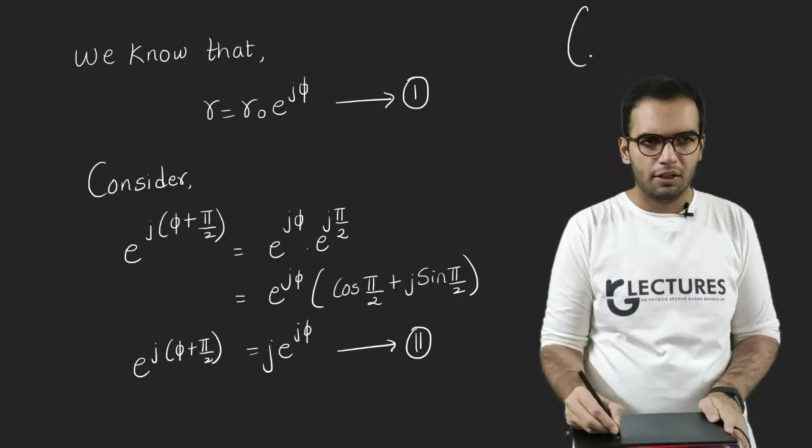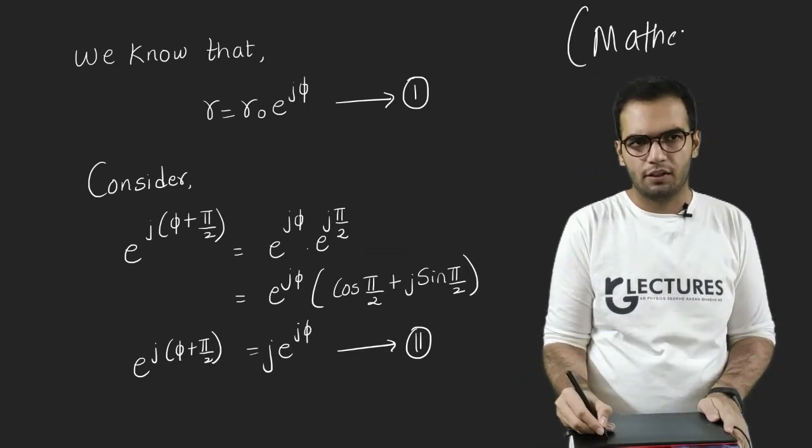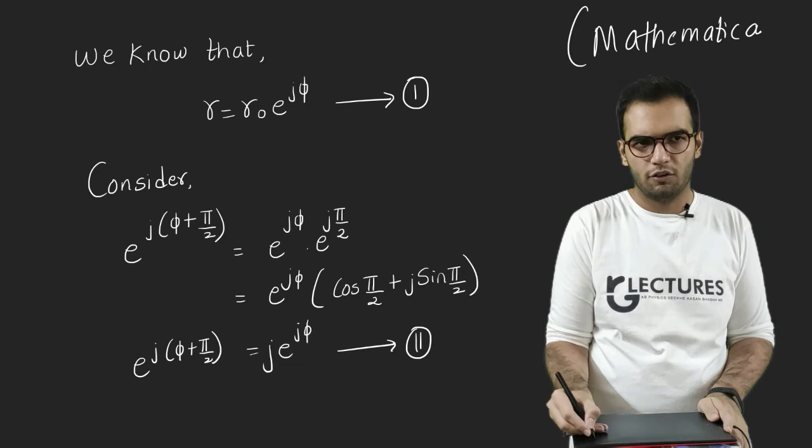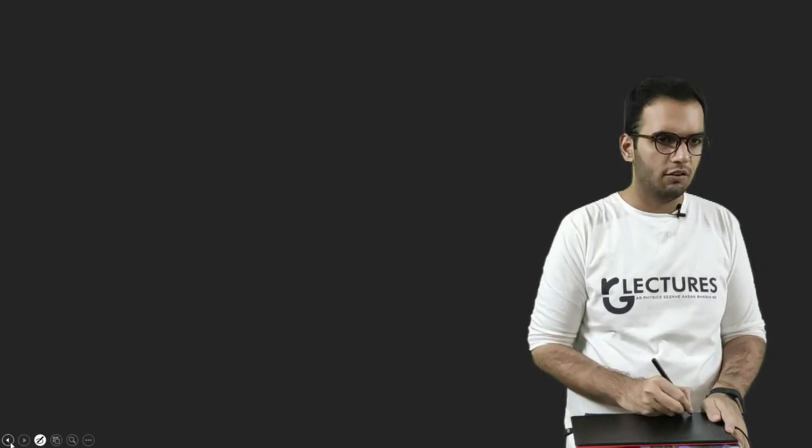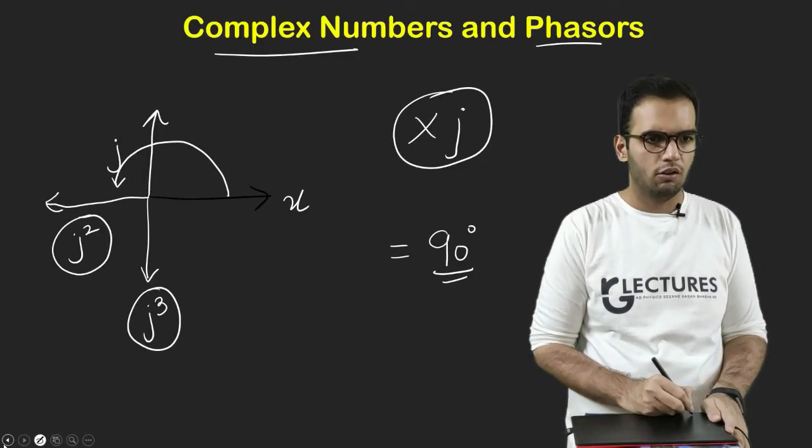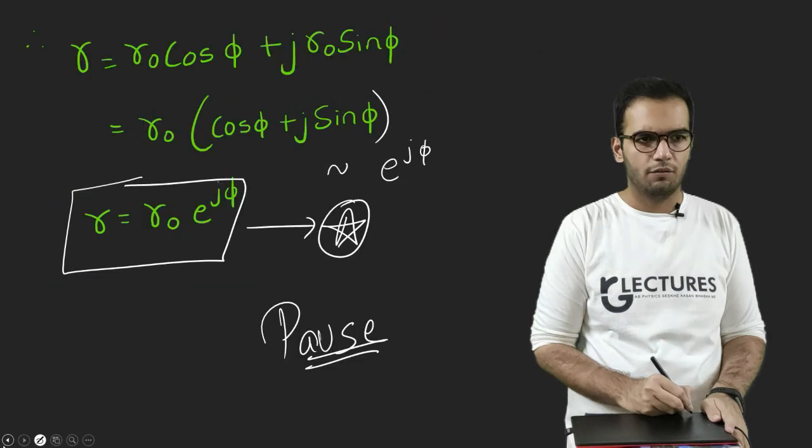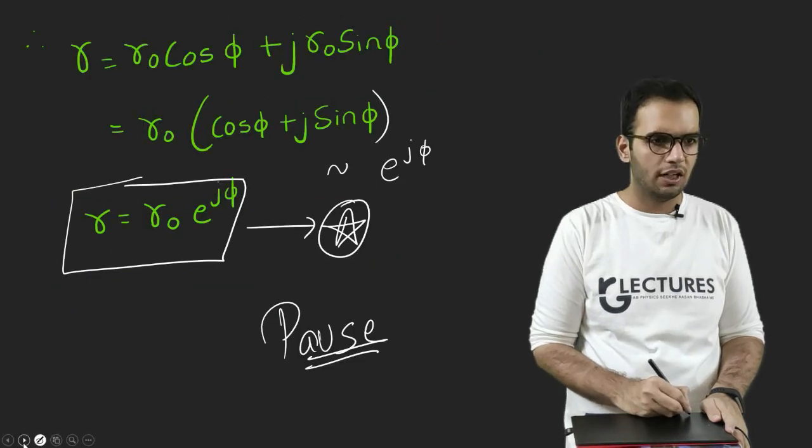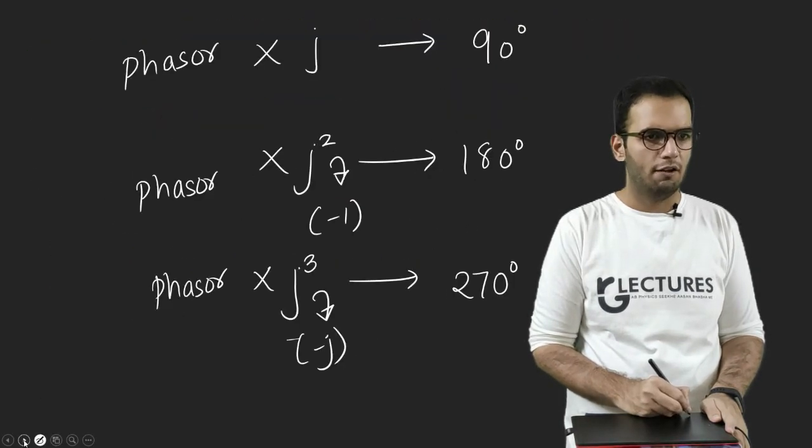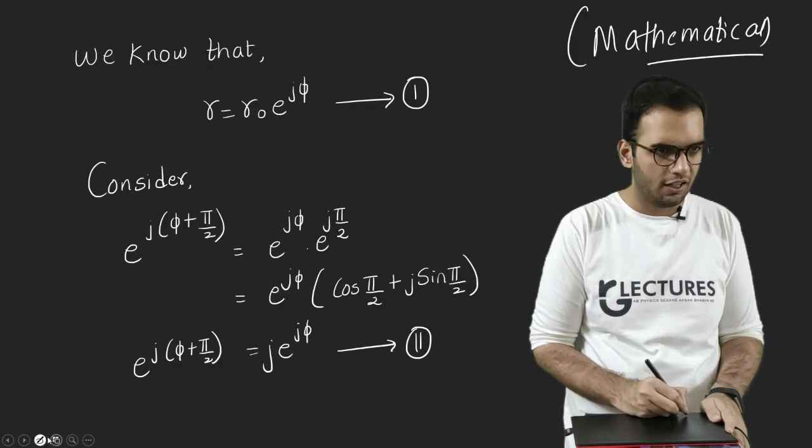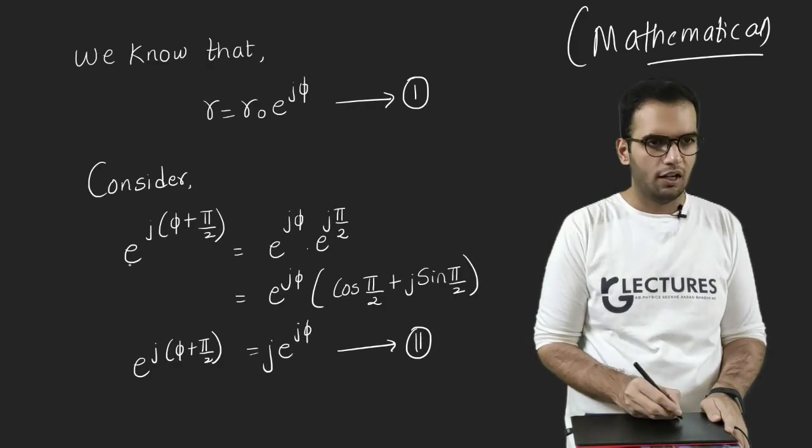So finally there is a mathematical proof for the same. So consider what we considered in the last equations. R equals R naught e raised to J φ. I have considered it here. Let me change the color.